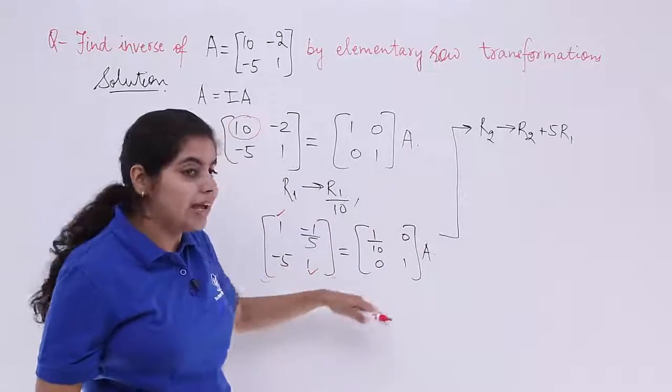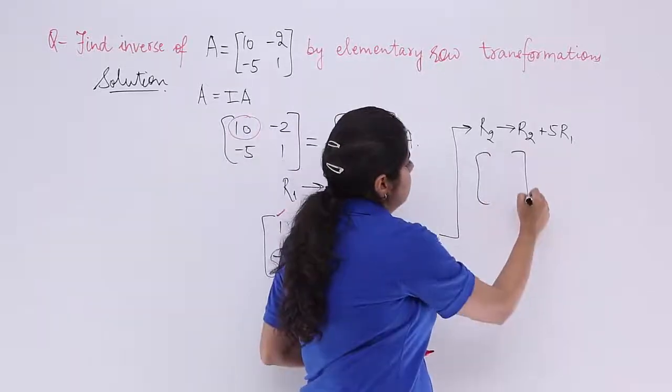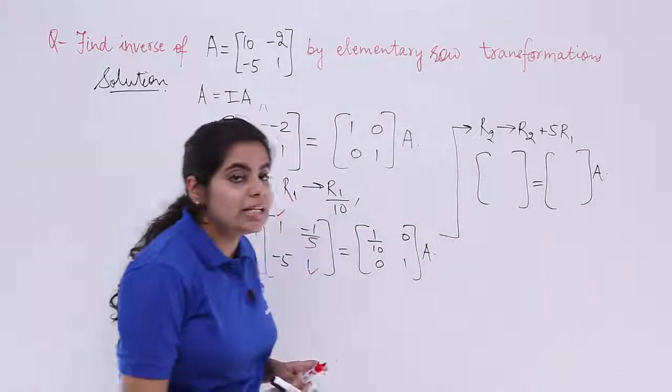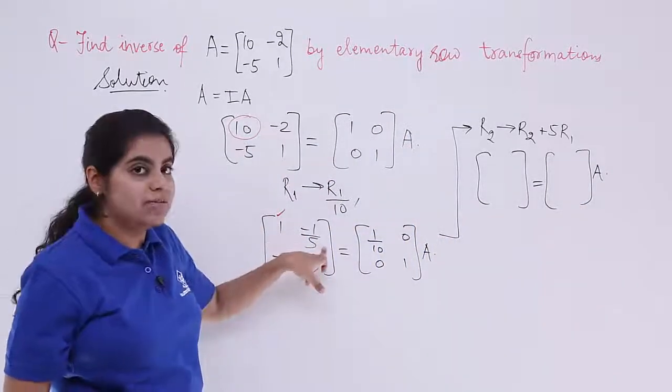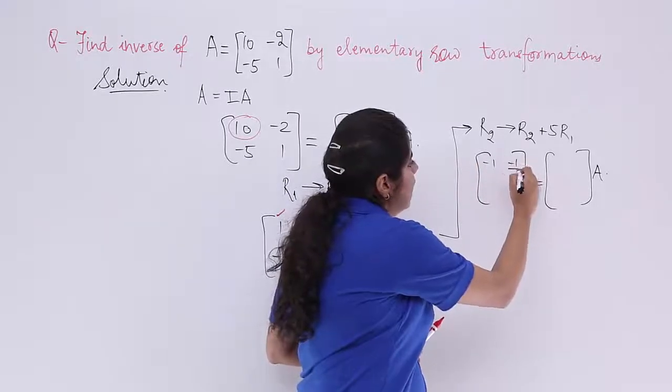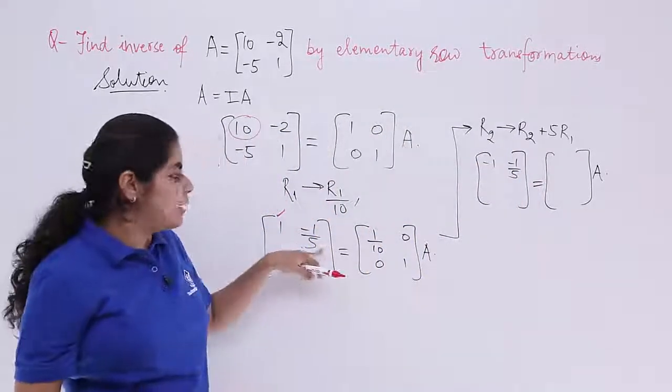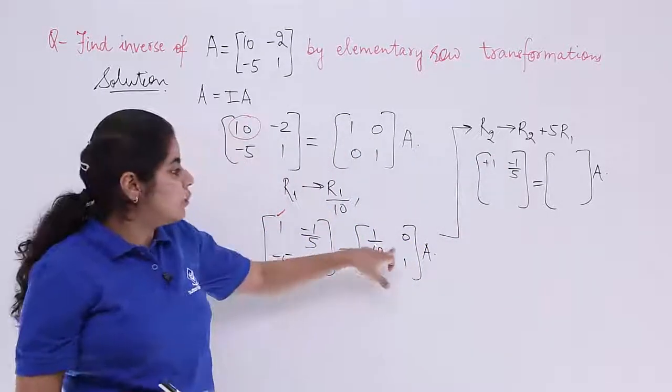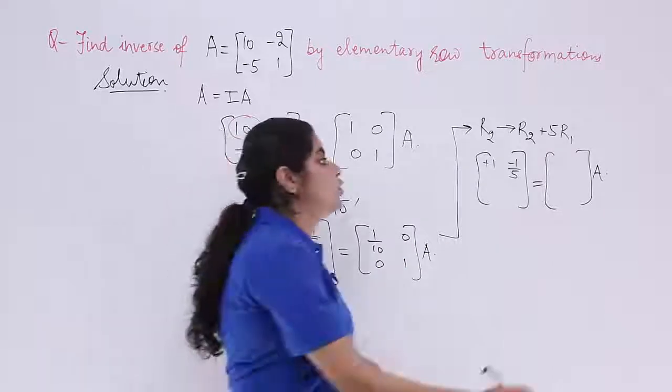What happens? We have again 2 matrices. And we have 1 minus 1 by 5 as it is because no change in the element of first row. So it is 1 minus 1 by 5. And here also 1 by 10, 0 remain as it is. They don't change.